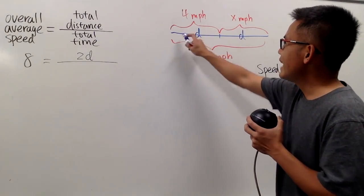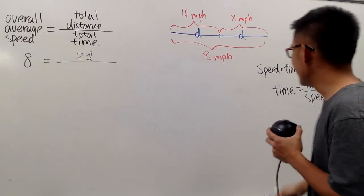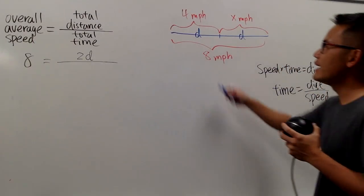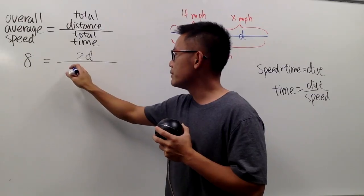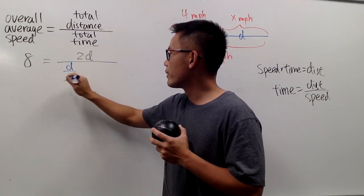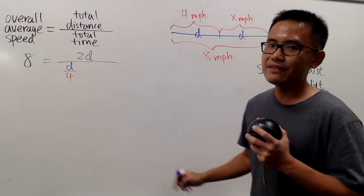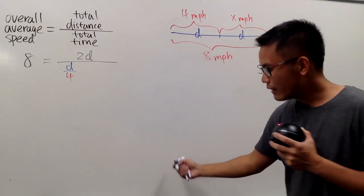Anyway. So for the first half, I will just put down d, right, for the distance, divided by 4 for the speed. So total time used, right here, it will be d over 4 for the first half of the marathon. And I also have to add...